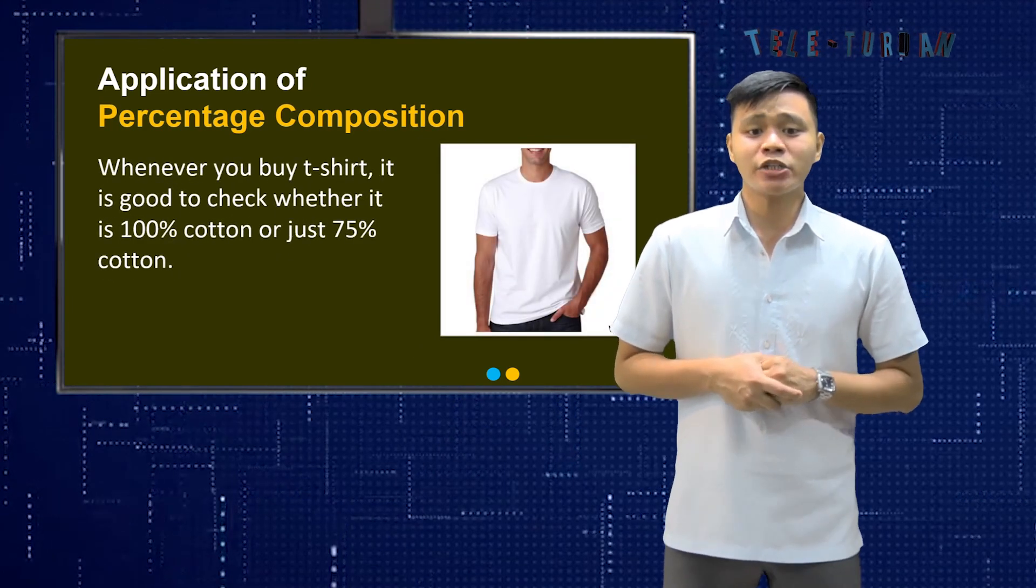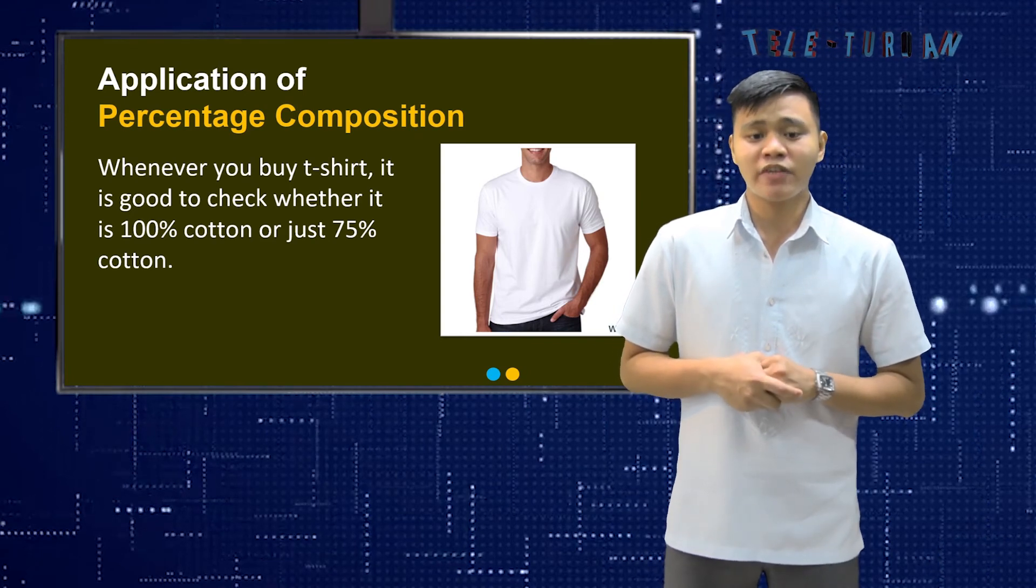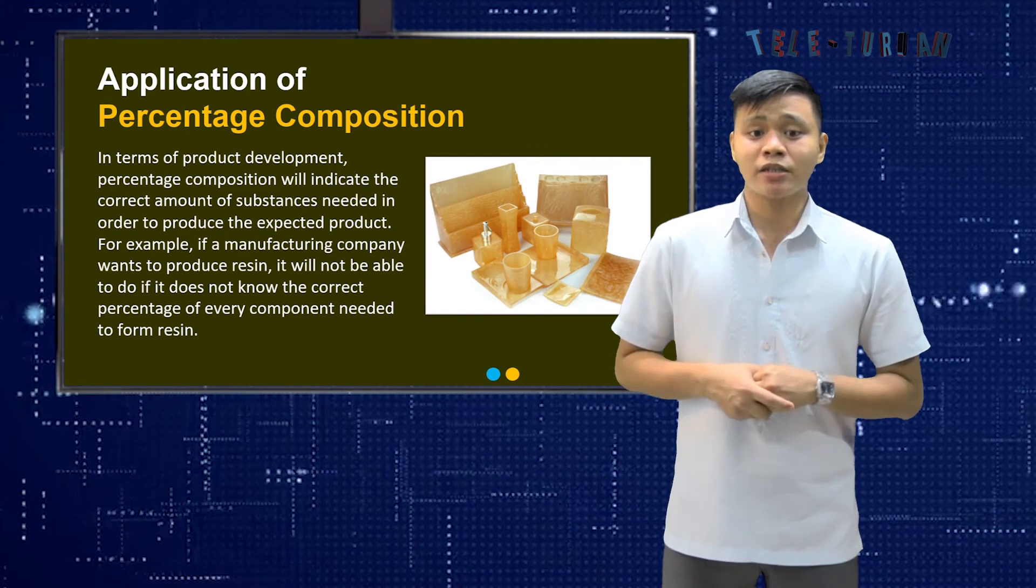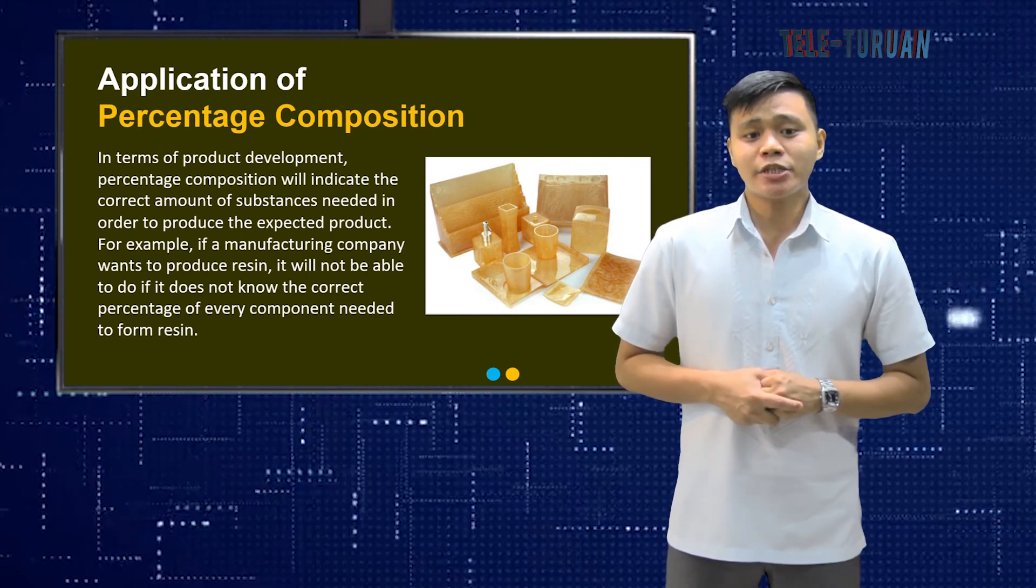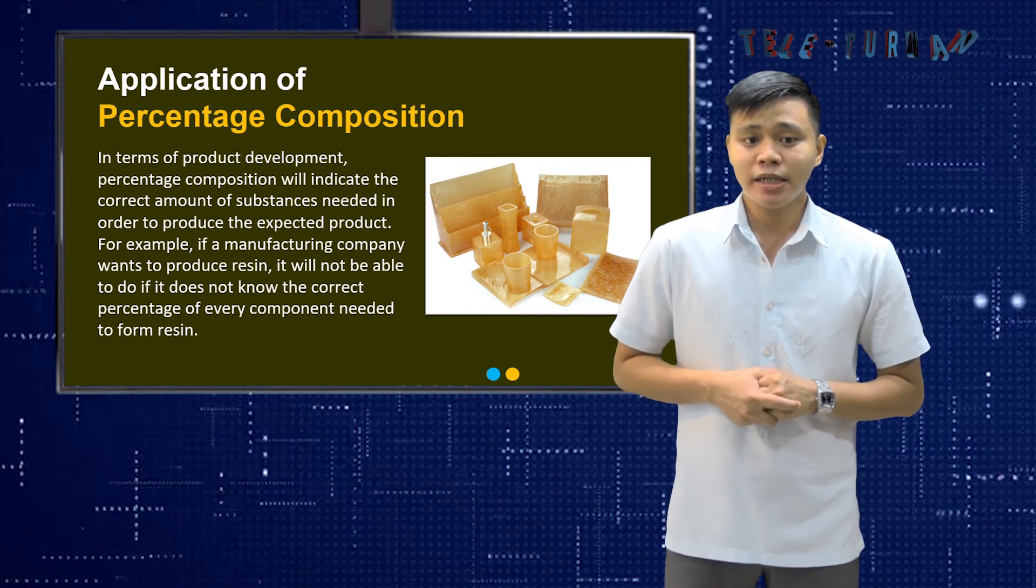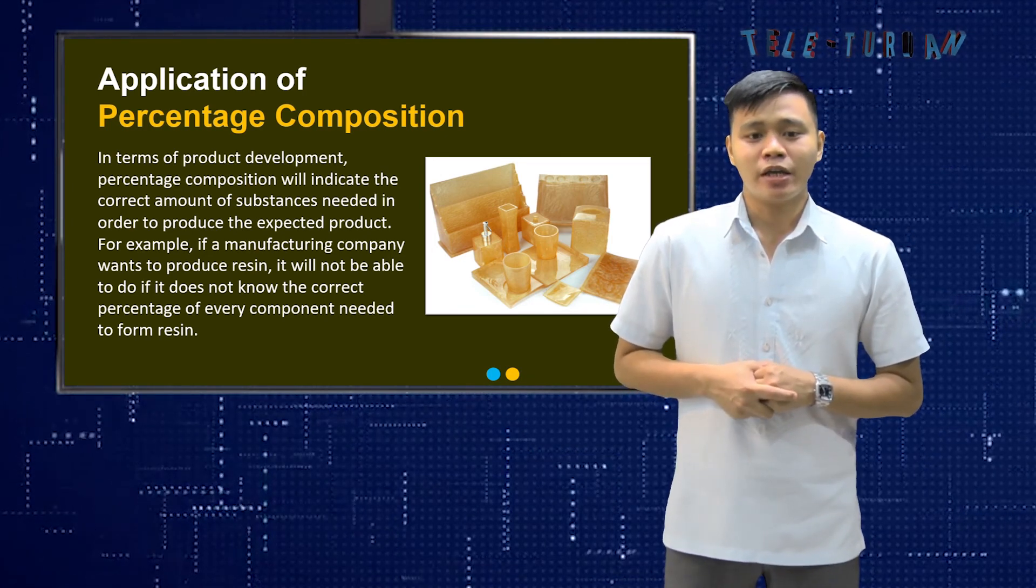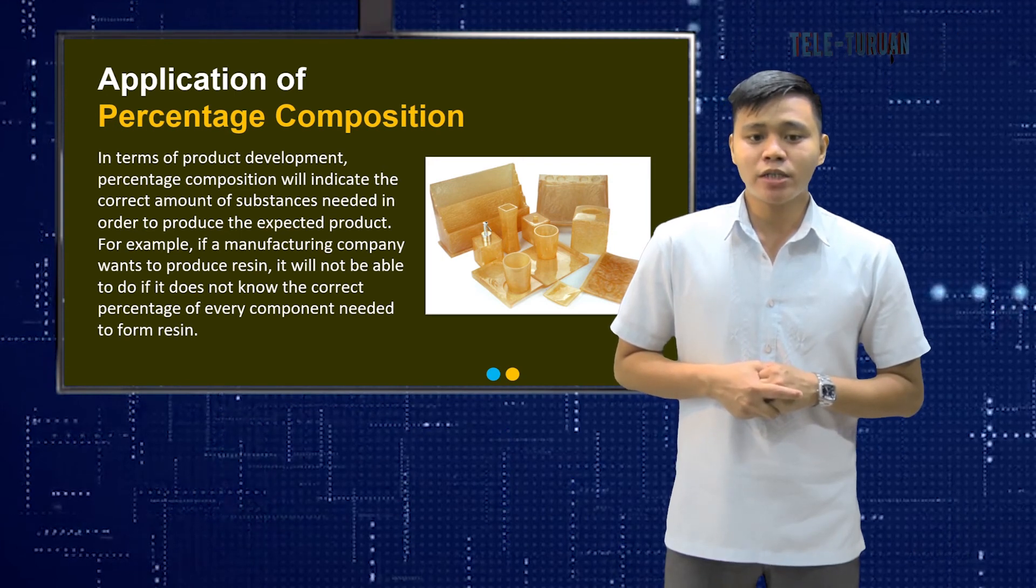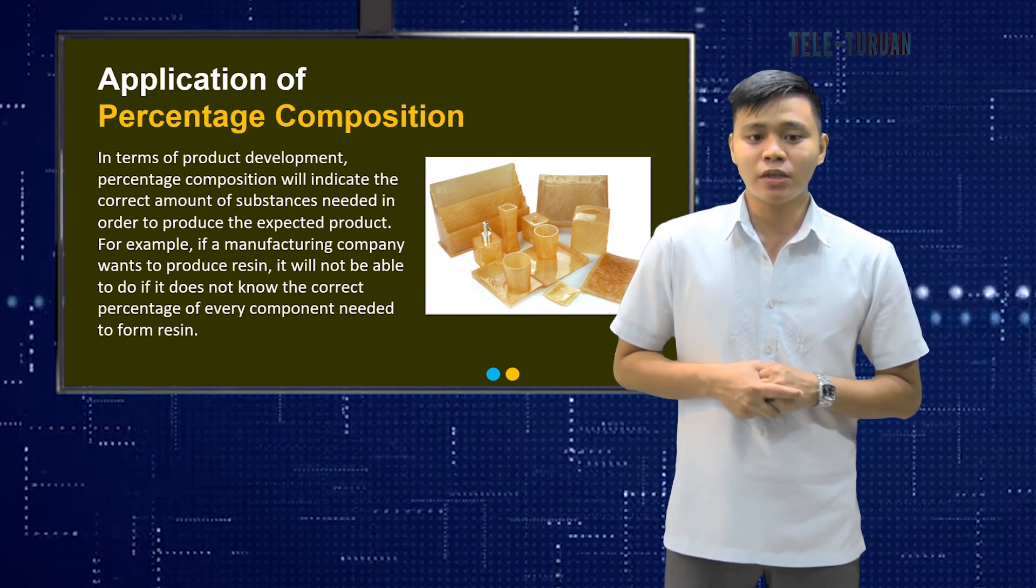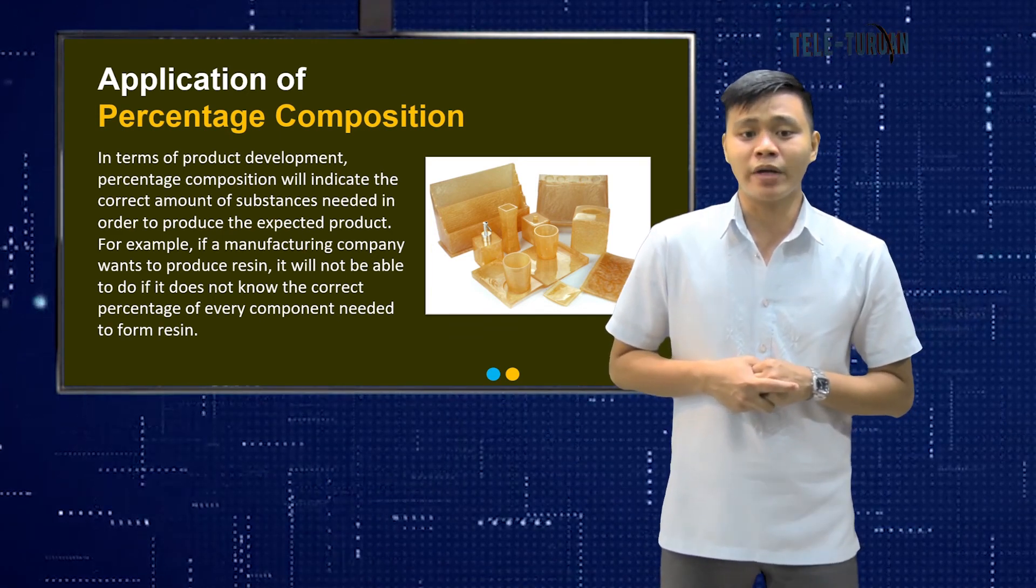Whenever you buy a t-shirt, it is good to check whether it is 100% cotton or just 75% cotton. In terms of product development, percentage composition will indicate the correct amount of substances needed in order to produce the expected product. For example, if a manufacturing company wants to produce resin, it will not be able to do so if it does not know the correct percentage of every component needed to form resin.